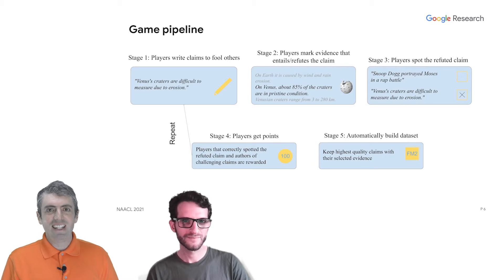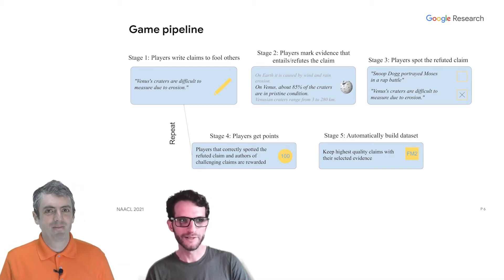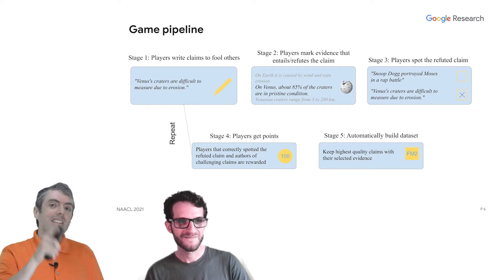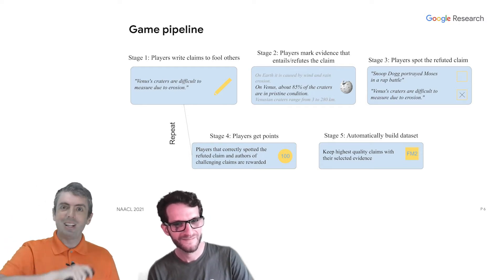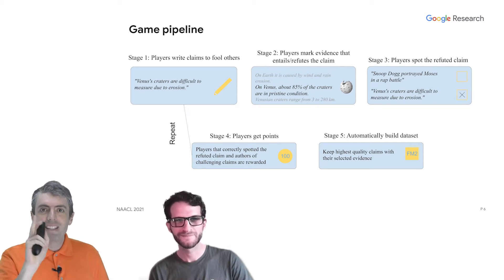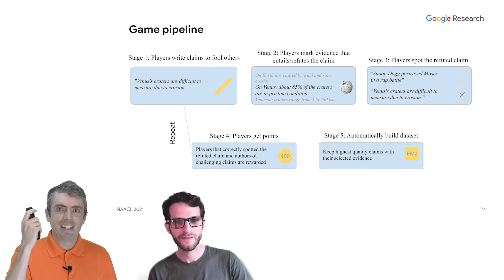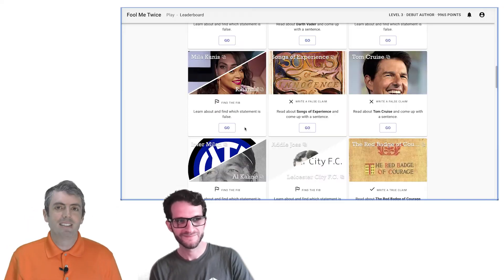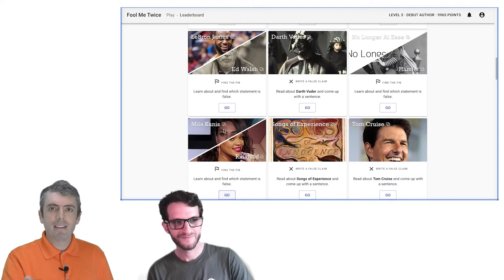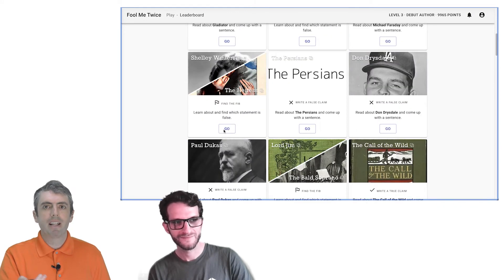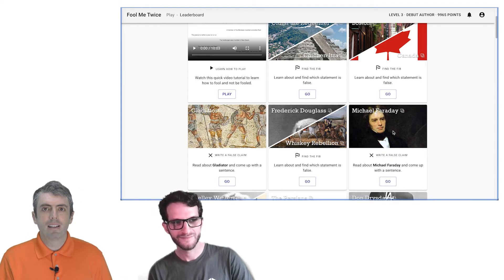Are you ready? Julian, do you think you can play the game that we made? For the viewers at home, this is not scripted — Julian does know how the game works and wrote a lot of the code, but he doesn't know what he's going to see in advance, and we're going to see if he can get this right. Our game, Fool Me Twice, has two phases: authoring, where you write the claims, and voting, where you try to spot the claim that isn't true. Let's start with voting on claims first.